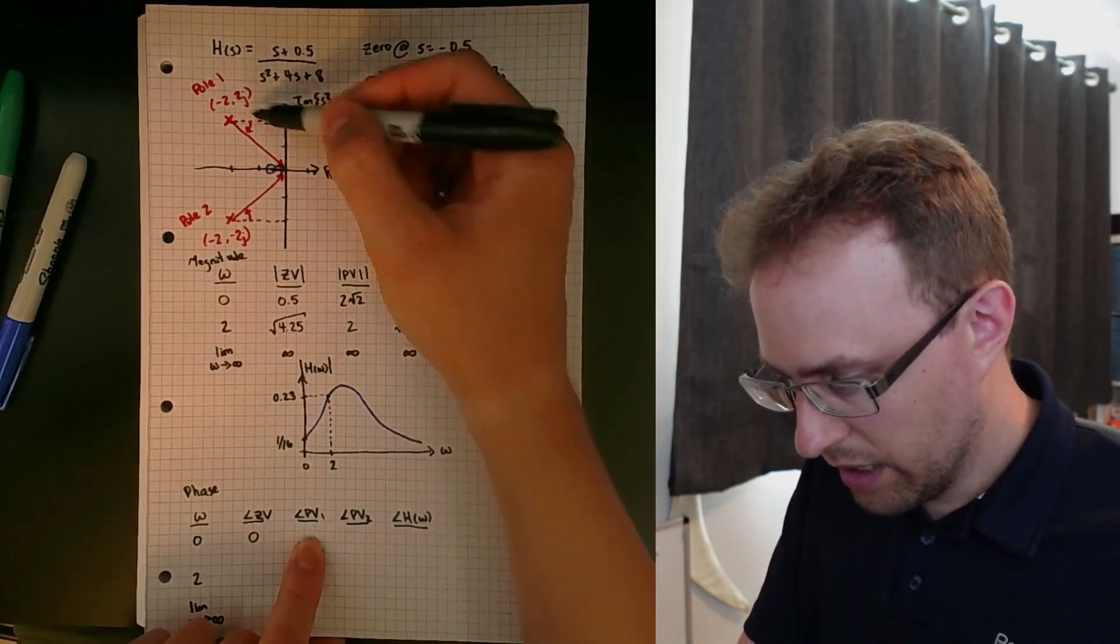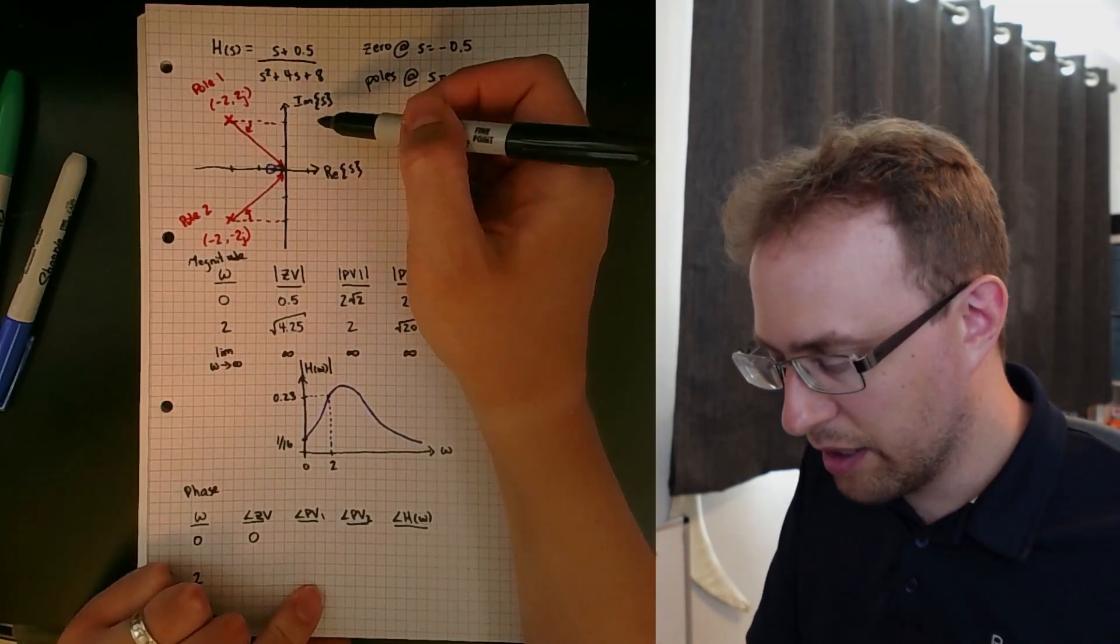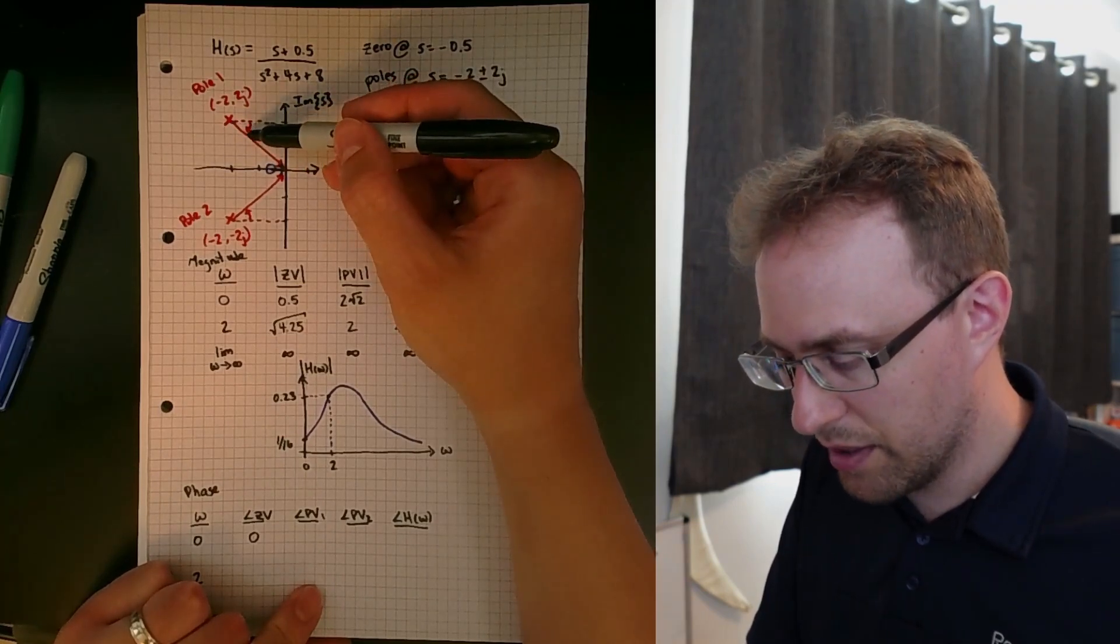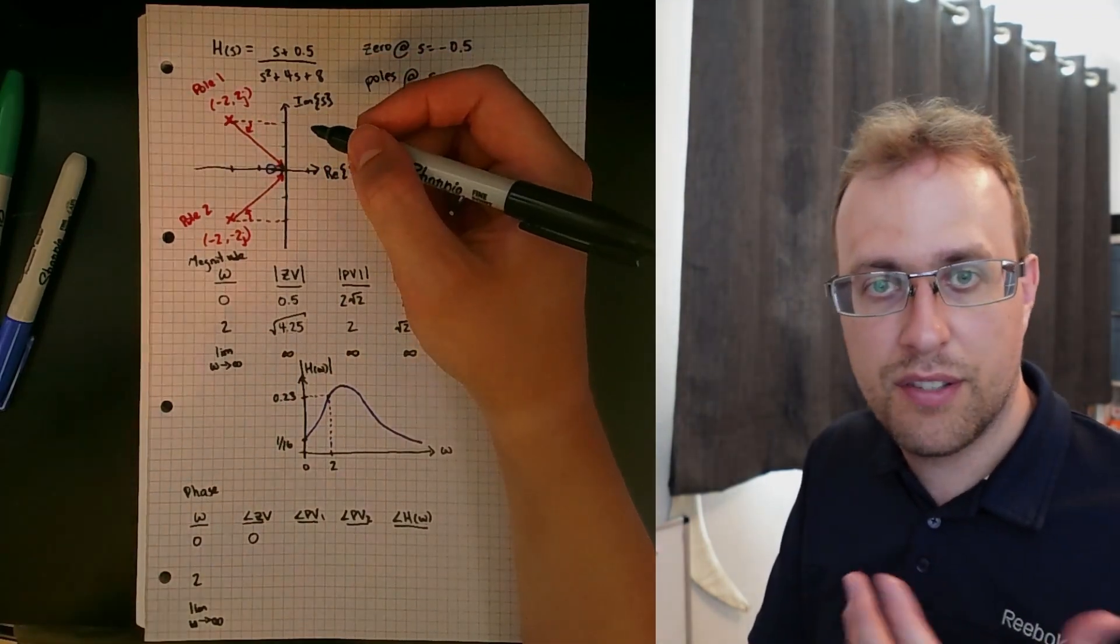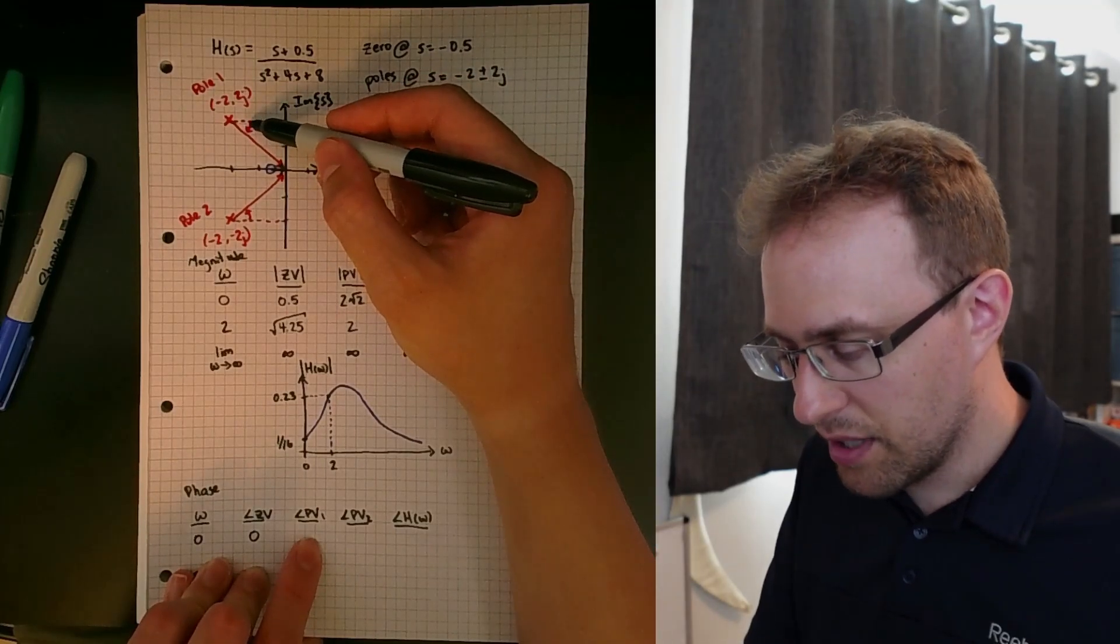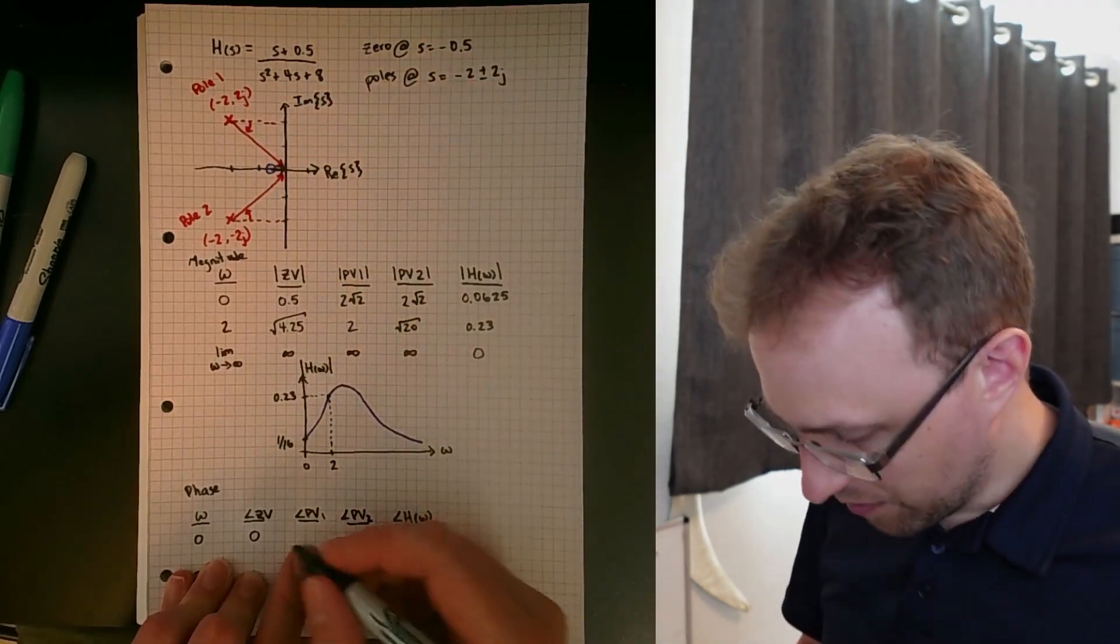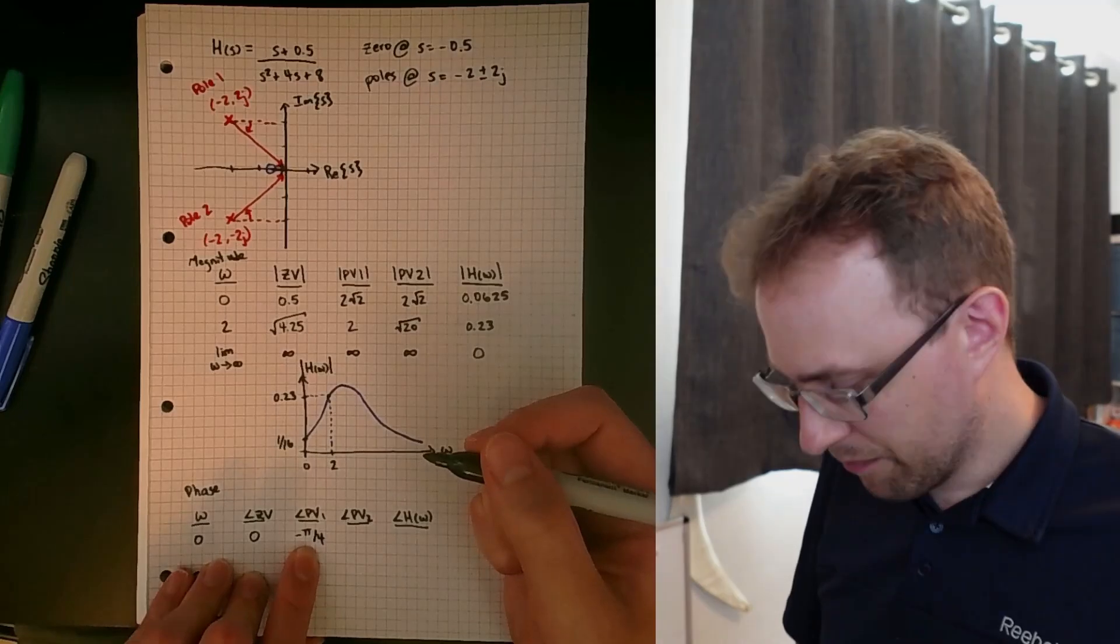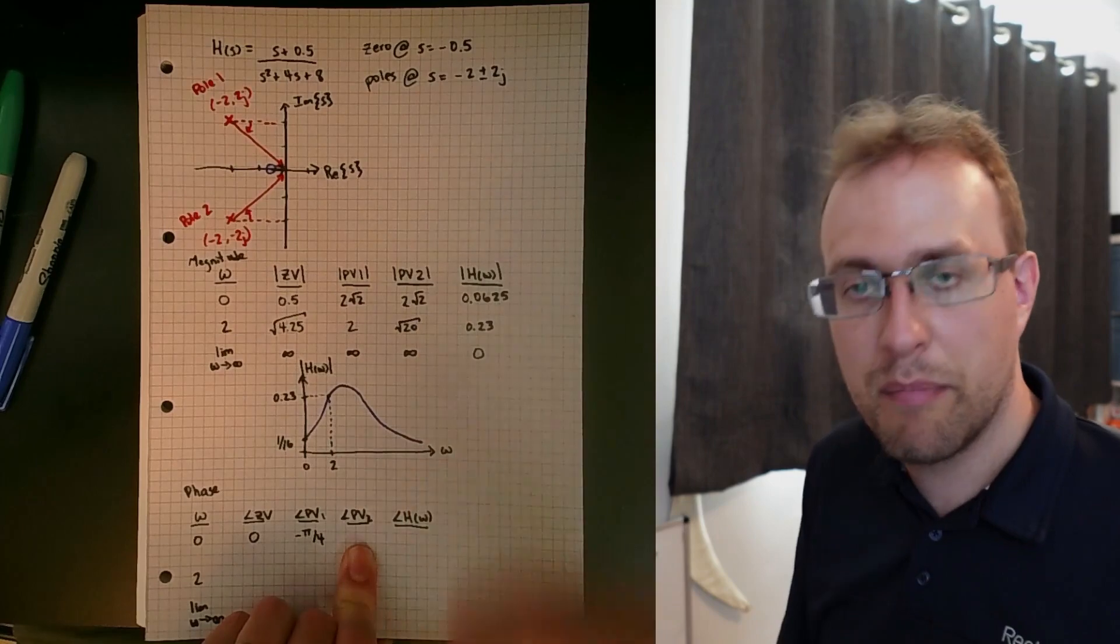For the zero vector, we have a phase of zero. For pole vector one, this one is going to be a negative angle, because we're going down from the line that points in the positive real direction. Because this is a length two and this is length two, this is actually a 45 degree angle. We're working with radians here. Since the whole 90 degrees would be pi over 2, 45 degrees would be pi over 4. So the phase associated with pole vector one is going to be negative pi over 4.